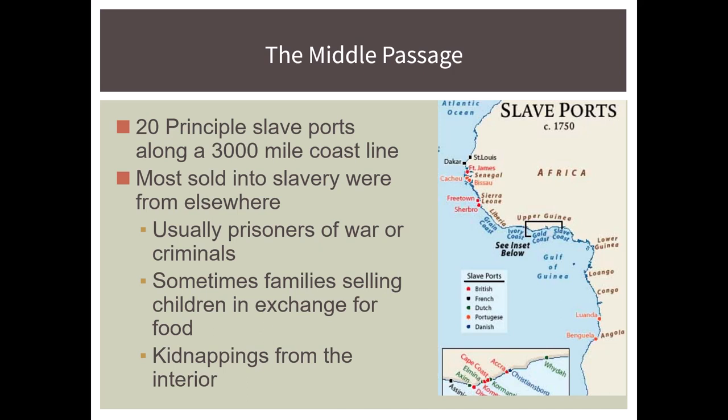These slaves were required to carry just enough provisions to get to the coast. When they arrived, the people were inspected by the surgeon of the slave ship, who carefully examined every bit of their anatomy. Those found to be worth selling were then branded with an iron on the breast or shoulder, or somewhere else on their body, with the mark of the trading company that was selling them.